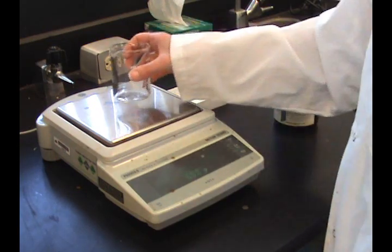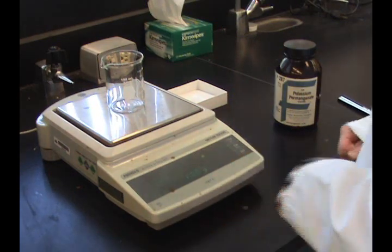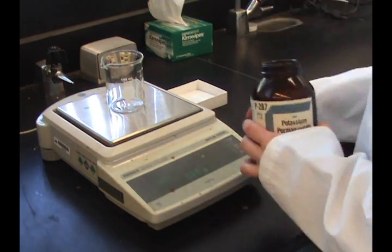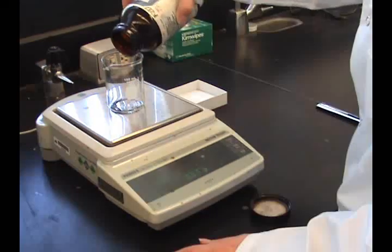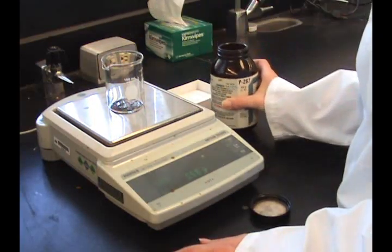Weigh the approximate mass calculated on a top loading balance. Tare a clean dry beaker and slowly roll or tap some crystals into it. To minimize waste, do not weigh excessive amounts.